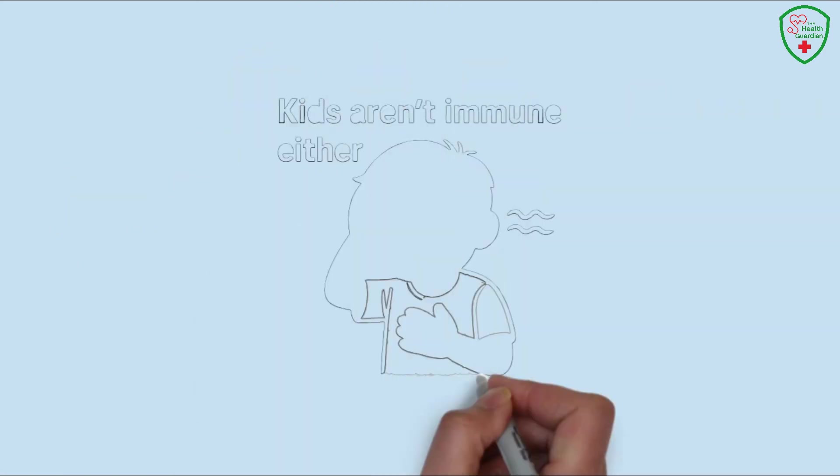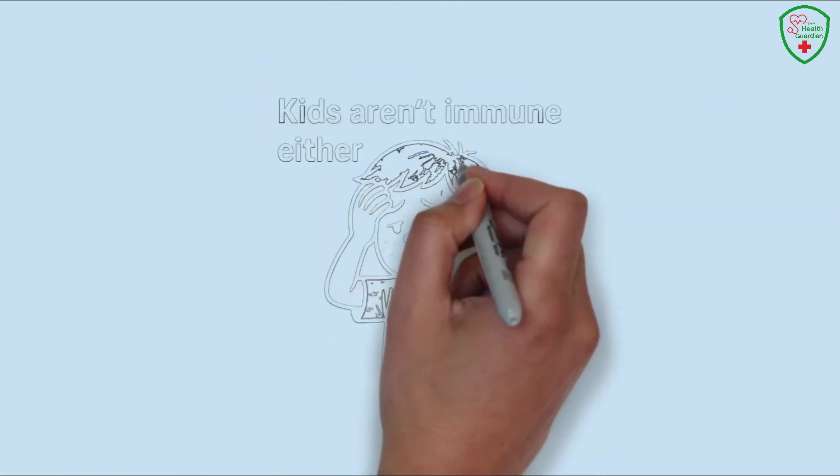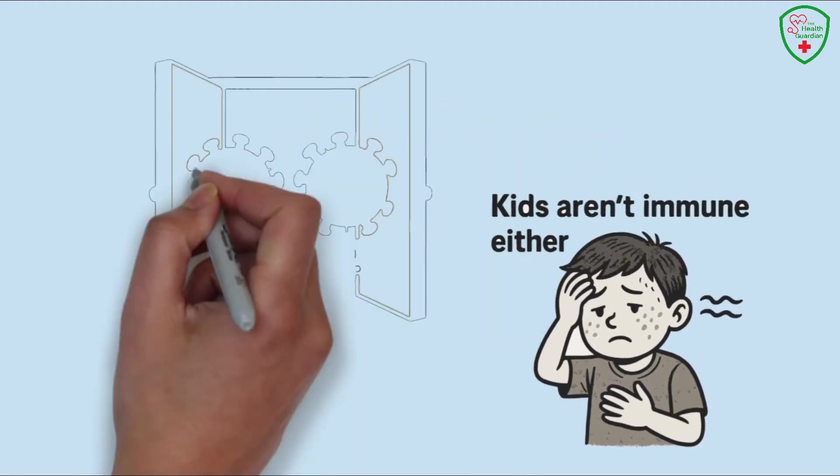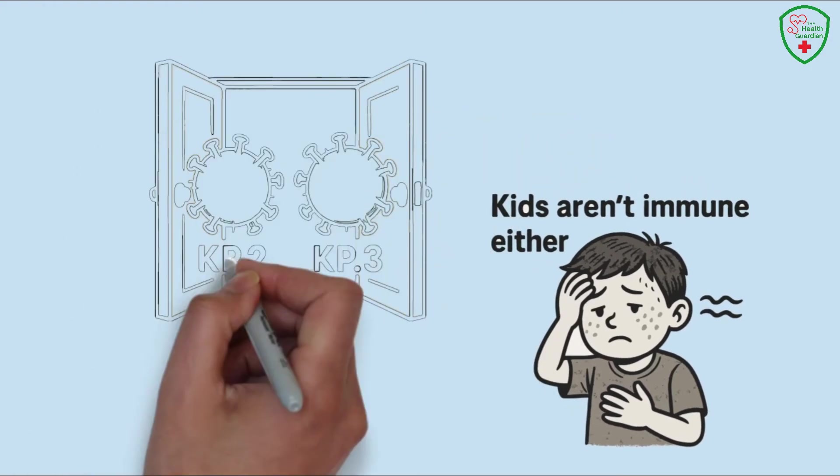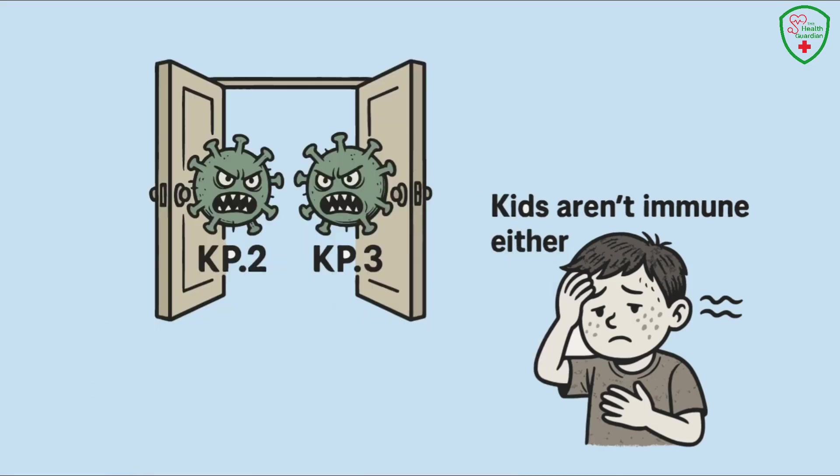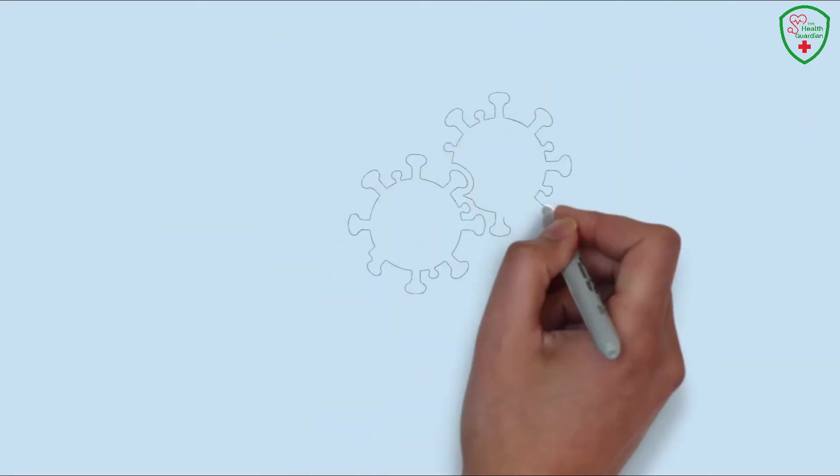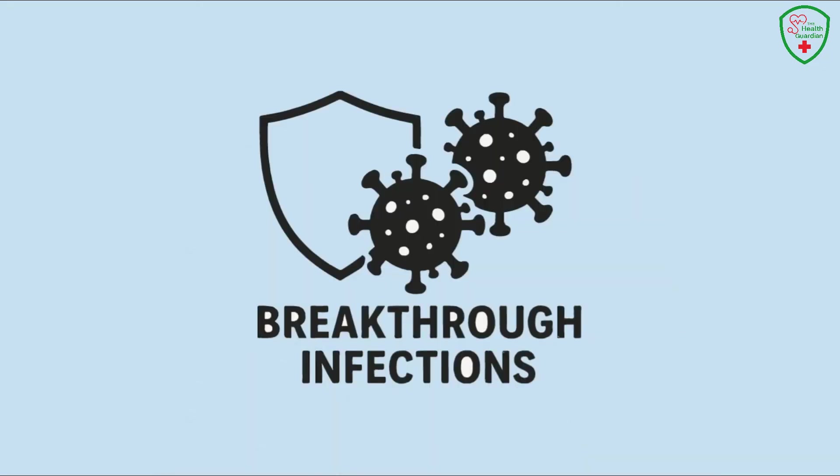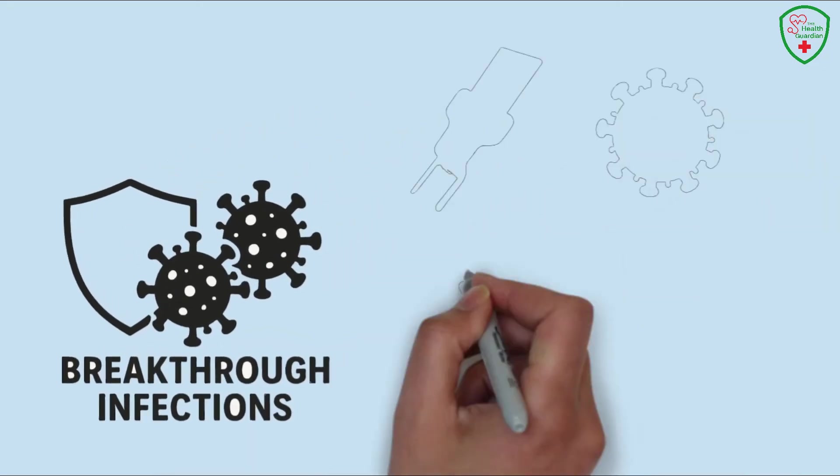Kids aren't immune either. In 2025, we're seeing more cases of children with milder symptoms like rashes, low-grade fevers, or fatigue that parents might mistake for just being tired from school. But these could be COVID clues, especially with FLIRT variants like KP.2 and KP.3 circulating widely.